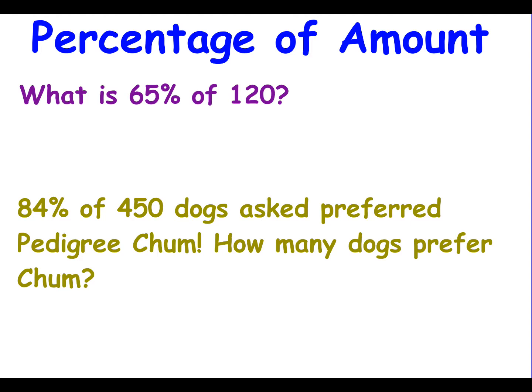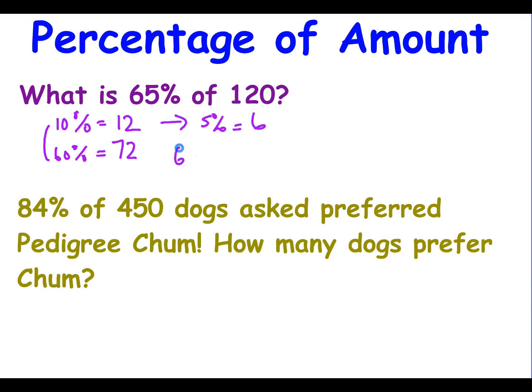Here are two questions for you. What is 65% of 120? Using our 10% rule, 10% is 12. 60% is 12 multiplied by 6, which gives us 72. We also know 5% must be 6. So to get 65% we add 72 and 6 together to give us 78. So 65% of 120 is 78.